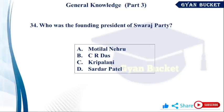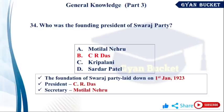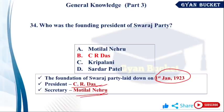Who was the founding president of the Swaraj Party? The Swaraj Party was formed on January 1, 1923. The founding members were C.R. Das and Motilal Nehru. The founding president was C.R. Das and the secretary was Motilal Nehru. So for the founding president, the answer is C.R. Das. Clear.